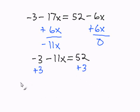Now I'm going to simplify. Negative 3 plus 3 is zero, and 52 plus 3 is 55. Now I'm going to rewrite my equation again. My resulting equation is negative 11x equals 55.